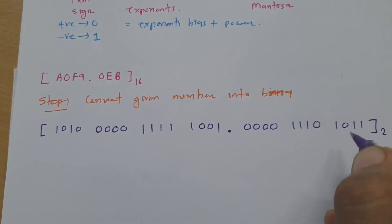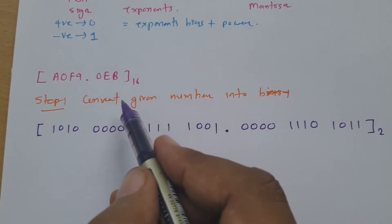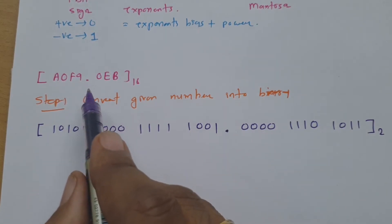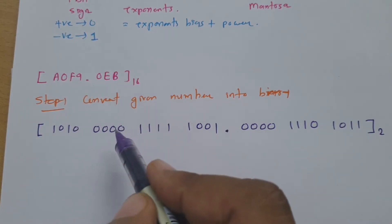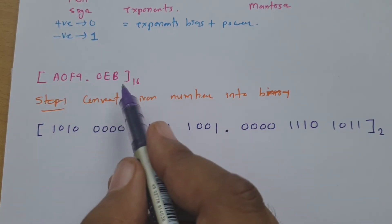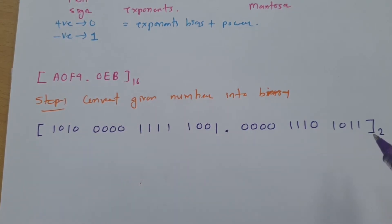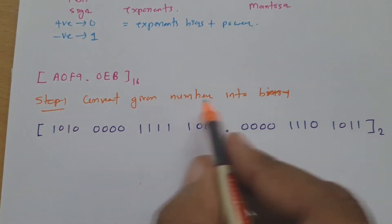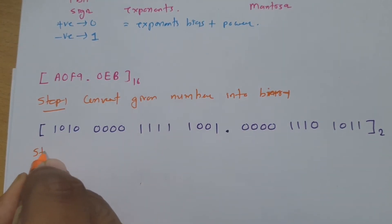This is how we convert hexadecimal data into binary. Sometimes the data may be given in decimal — in that case, just convert the decimal number into binary. Here hexadecimal data was given. This completes step 1. Next, step 2 is to convert the given binary number into scientific notation.